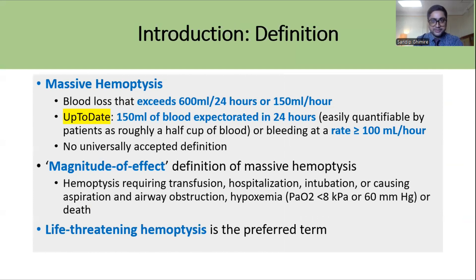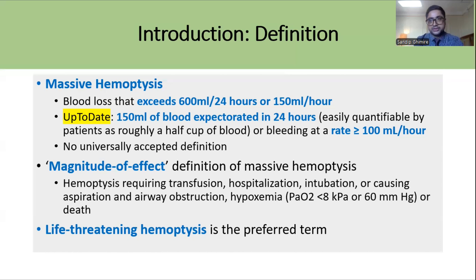Because there is no universally accepted definition, nowadays we use the magnitude-of-effect definition of Massive Hemoptysis. According to this definition, hemoptysis requiring transfusion, hospitalization, intubation, or causing aspiration, airway obstruction, hypoxemia, or death can be considered Massive Hemoptysis. Rather than using the term Massive Hemoptysis, life-threatening hemoptysis is the preferred term nowadays.